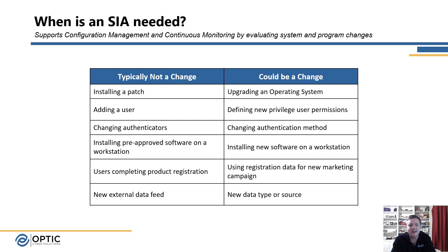So when is an SIA needed? As mentioned, changes are inevitable — they're going to happen on a system and we want those changes to happen; we don't want the system to remain stagnant. We need to understand what types of changes are within the normal operational constraints of the system versus an actual change that could affect the security posture. Here in this table, we've pulled together some examples of typical changes and when you may or may not need to perform an SIA.